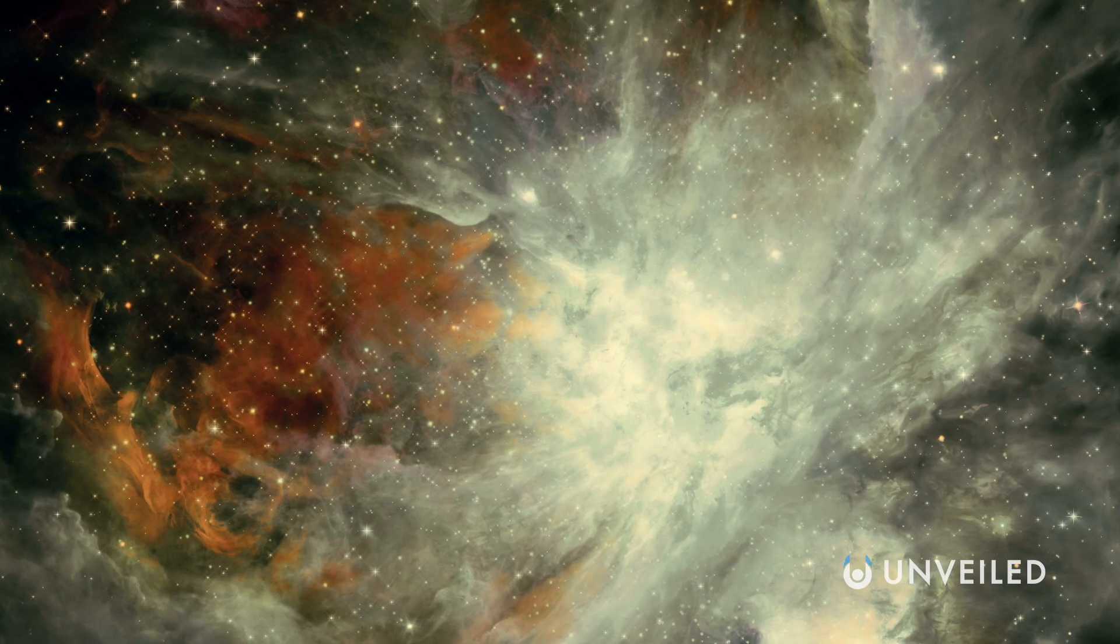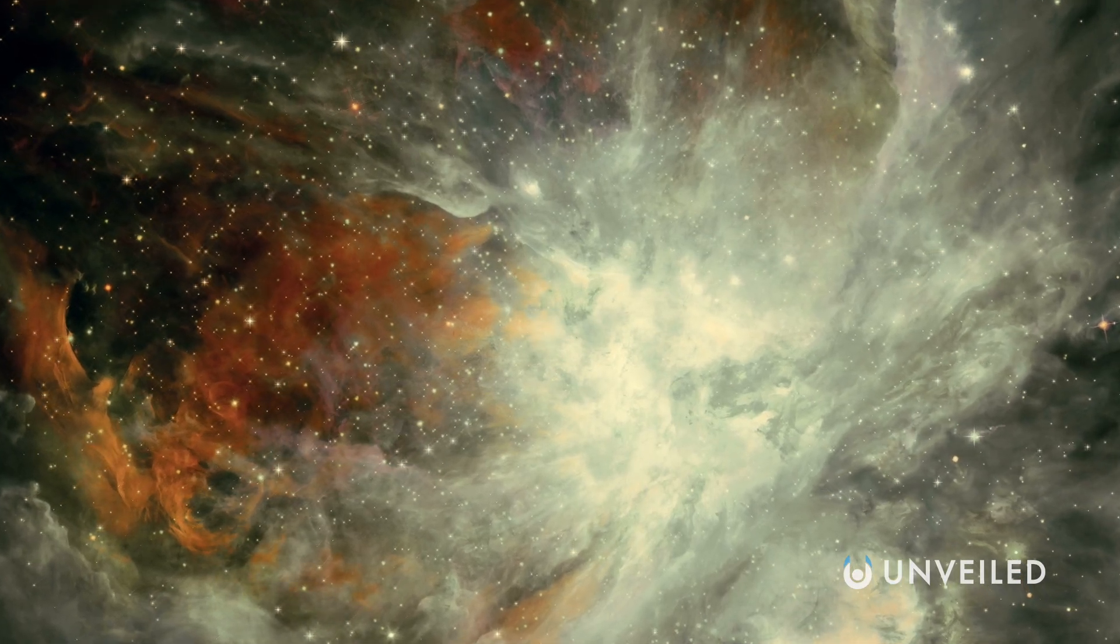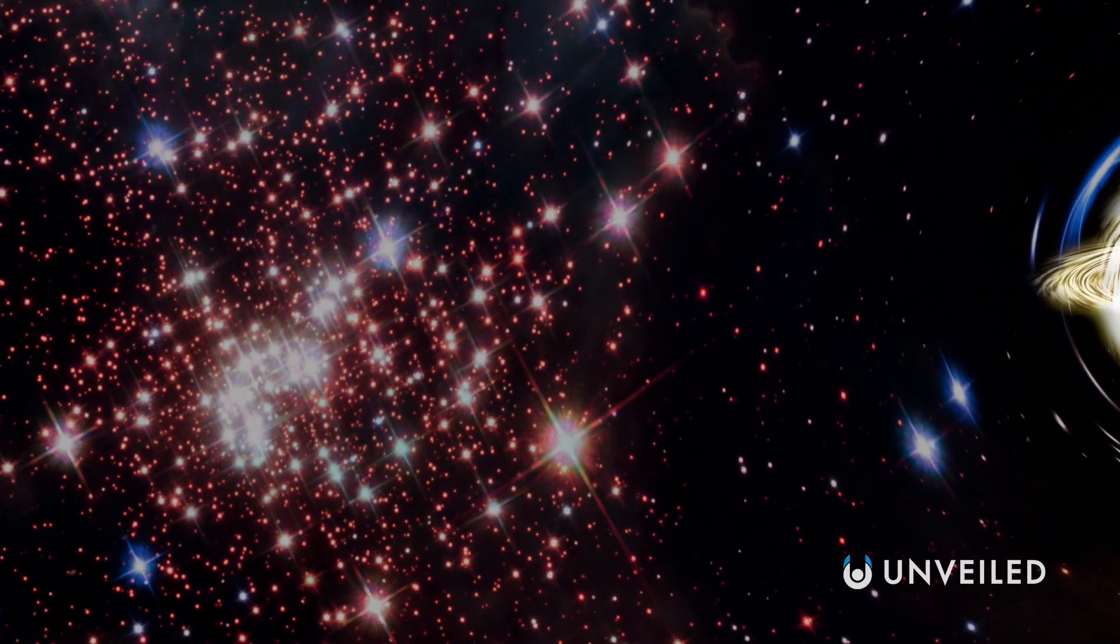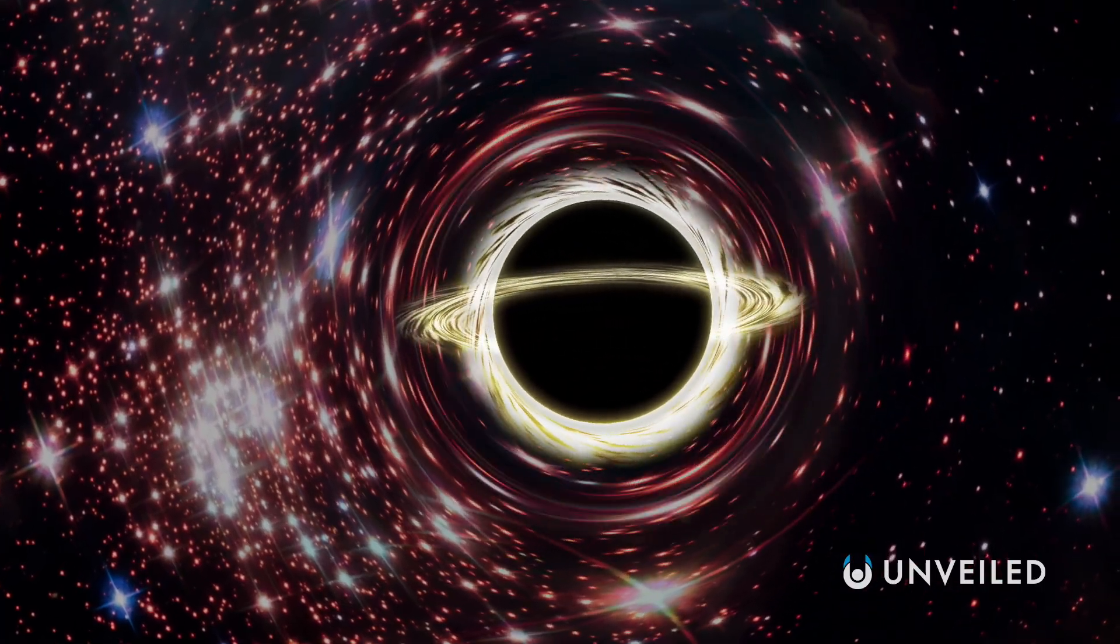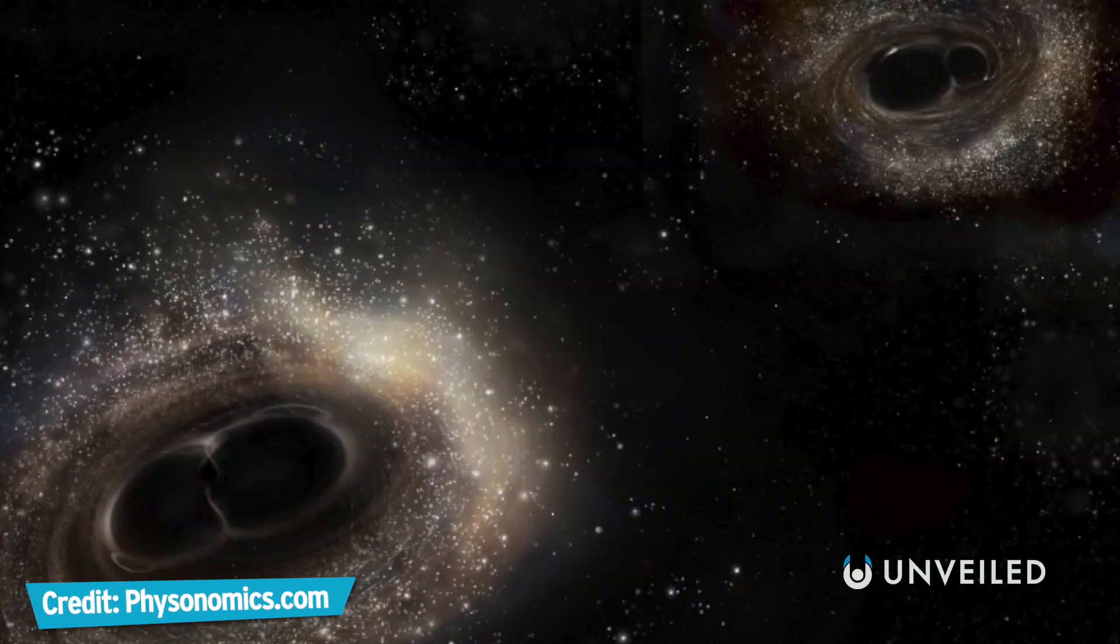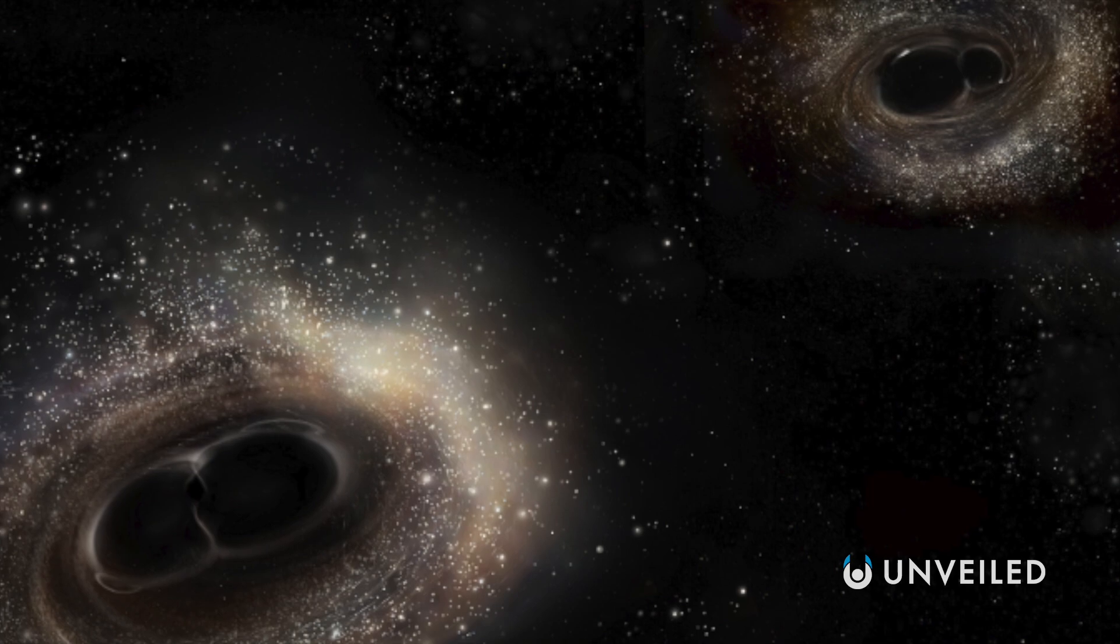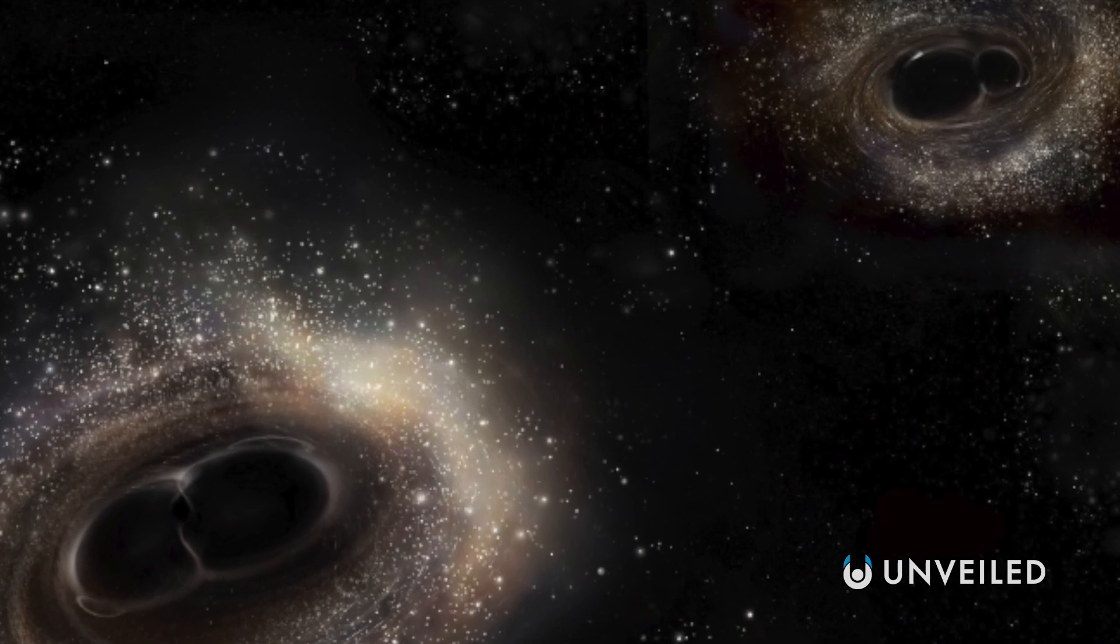Perhaps the first question we'd ask is why expansion stopped in the first place. Something must have happened to the dark energy for it to either change its behavior or disappear. As it is, dark energy accounts for about 68% of the total energy content of the universe. So any change would be a significant one. One possibility is that dark energy could somehow turn itself into dark matter. As it stands, some researchers already think that the opposite is happening – that dark matter is decaying into dark energy, increasing the amount of dark energy in the universe.